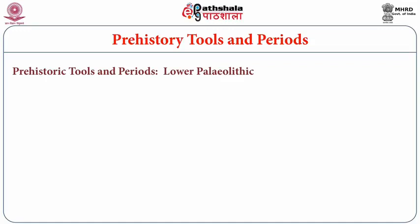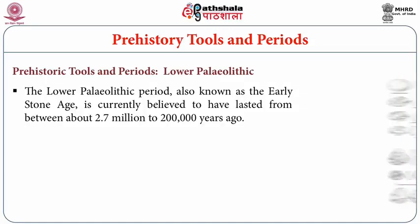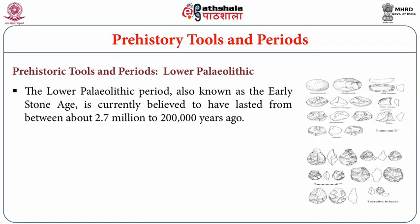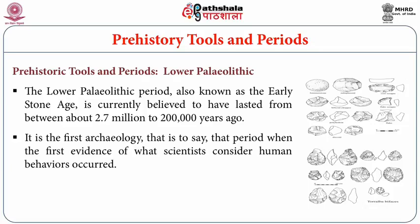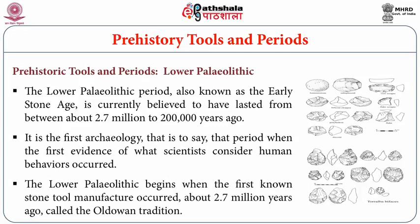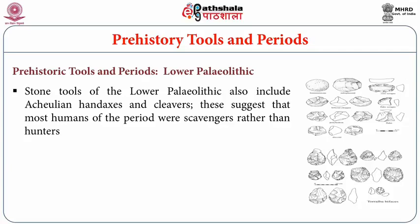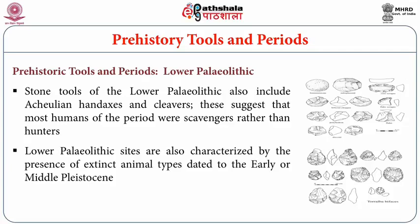The Lower Paleolithic period, also known as the Early Stone Age, is currently believed to have lasted between about 2.7 million to 200,000 years ago — the first archaeology, when first evidence of human behaviors occurred. It begins with the first known stone tool manufacture, called the Oldowan tradition. Stone tools of the Lower Paleolithic also include Acheulean hand axes and cleavers, suggesting that most humans of the period were scavengers rather than hunters. Lower Paleolithic sites are characterized by extinct animal types dated to Early and Middle Pleistocene.